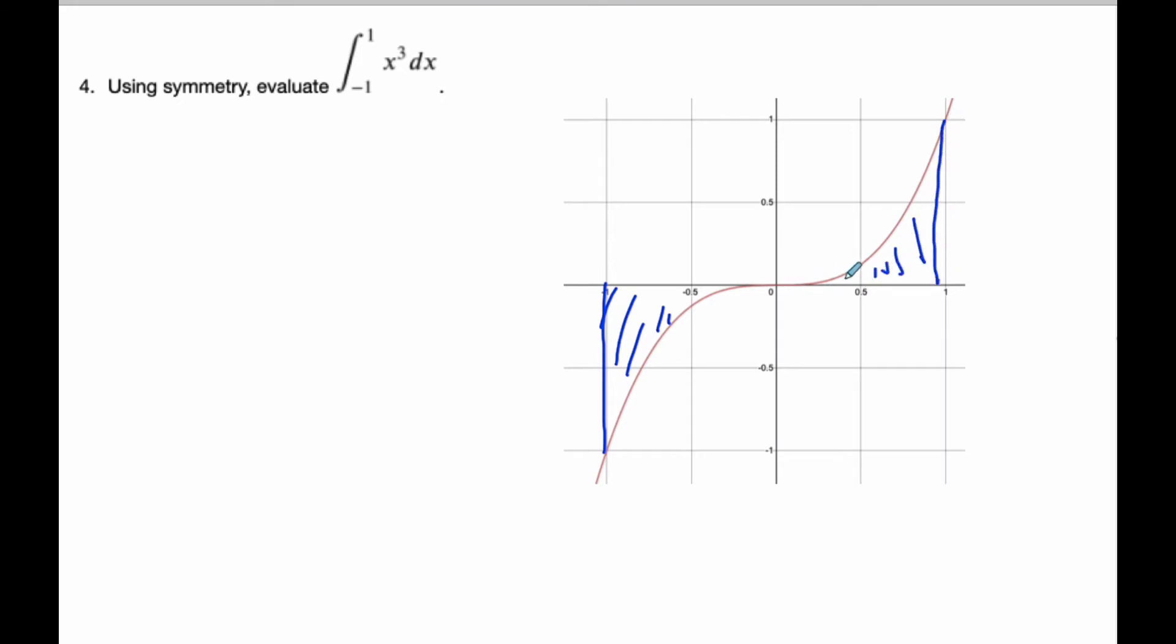And when I do that, I know that these values are the same, except they're exactly opposite. And so they will cancel each other because this is a positive area and this is a negative area. So this is equal to 0.